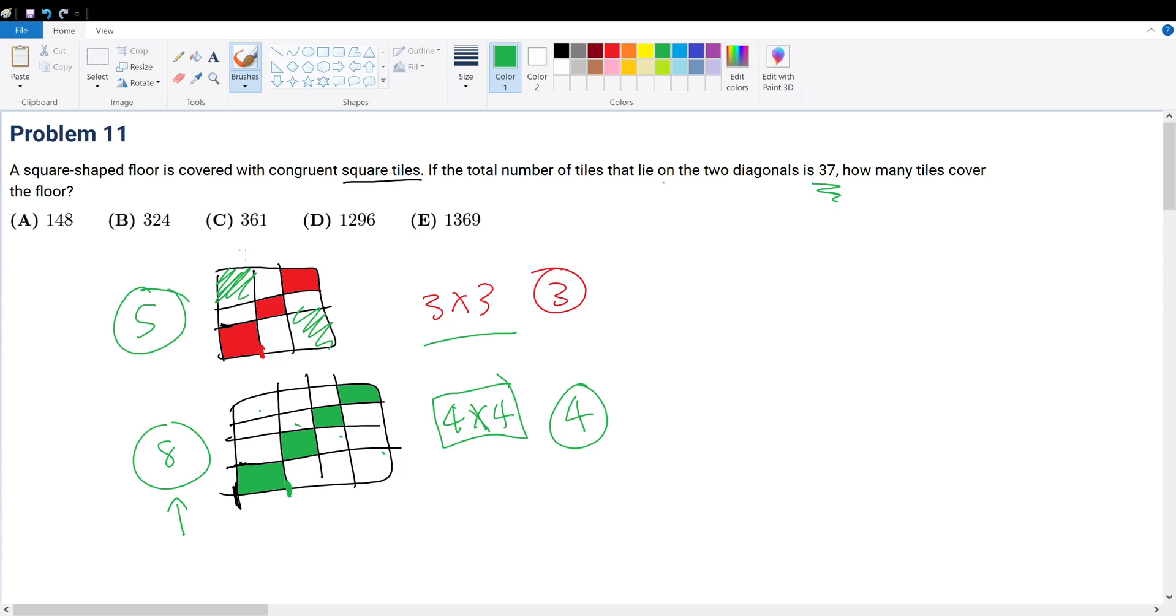Tiles that are on these two diagonals. So that means our square here must be—since we have an odd number—it has to be an odd number of tiles. It's an odd by odd square.